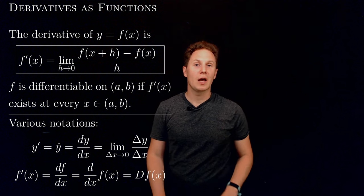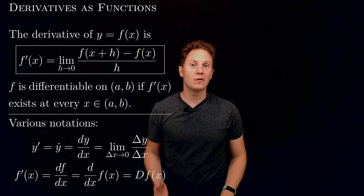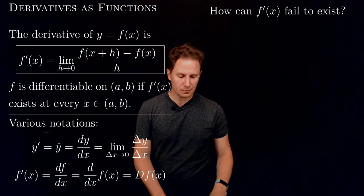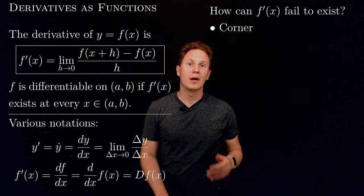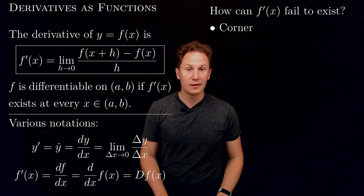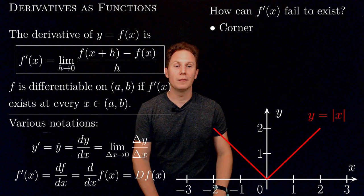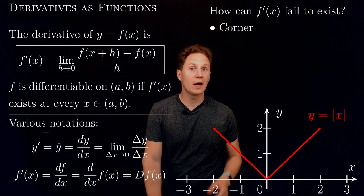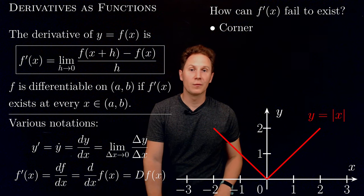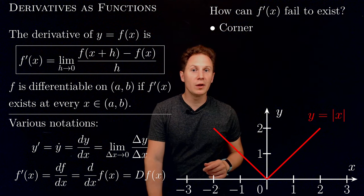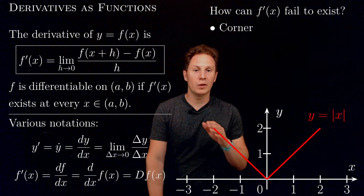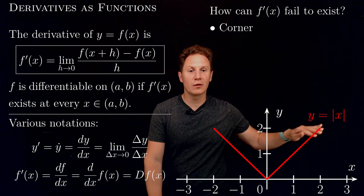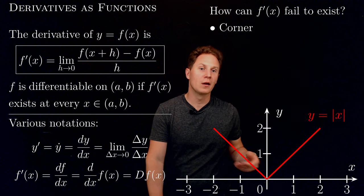This derivative function f'(x) may not be defined at certain points x along the number line, and there are various ways in which the derivative can fail to exist. One we've already seen: when the graph of f has a sharp corner at the point x, the derivative does not exist there. For example, the absolute value of x has a sharp corner at x = 0, and we've shown its derivative at 0 does not exist. However, everywhere else — for negative x we get −1, for positive x we get +1 as the slopes of the tangent lines.